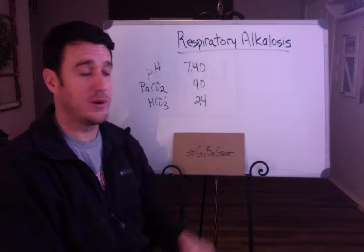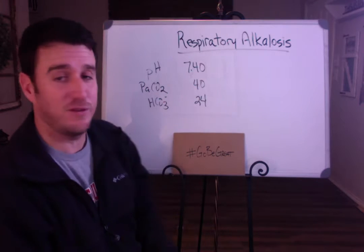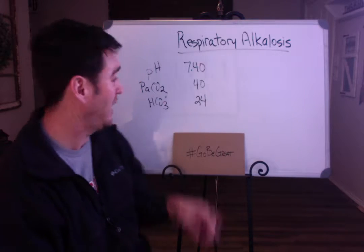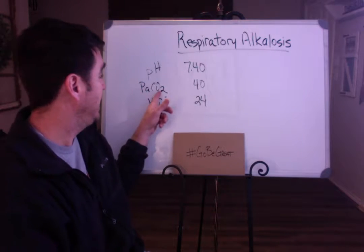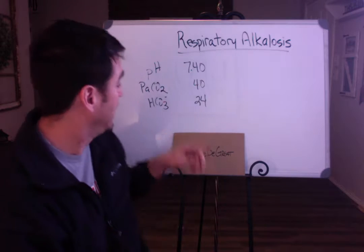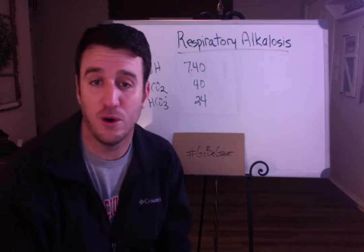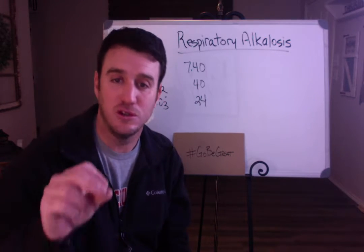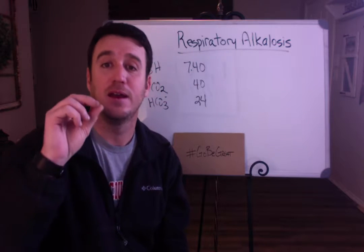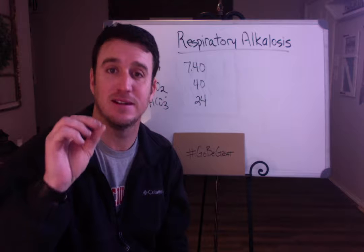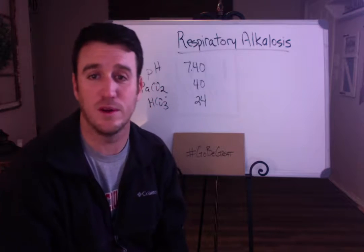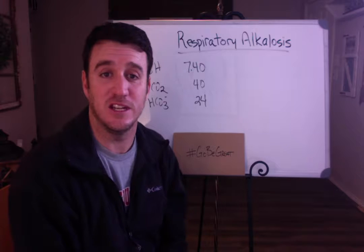We have our normals up here on the board. pH is 7.40 — normal range is 7.35 to 7.45. PaCO2 is 40 — normal range is 35 to 45. Bicarb is 24 — normal range is 22 to 26. I'm using 22 to 26 with a normal of 24 for the purpose of this video.